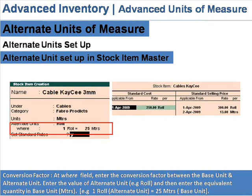Conversion factor: at the 'Where' field, enter the conversion factor between the base unit and the alternate unit. Enter the value of the alternate unit and then enter the equivalent quantity in the base unit. For example, one Roll (alternate unit) is equal to 25 meters (base unit).